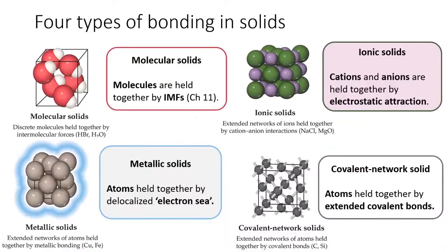The four types of solids we'll look at are molecular solids, ionic solids, metallic solids, and covalent network solids.